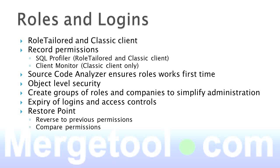When you administer logins with multiple companies and a couple hundred roles, it gets very time consuming because you have so many roles multiplied by the number of companies to assign to each user. Easy Security allows you to create groups of roles and groups of companies, so instead of assigning them individually you may only have one or two permissions per user. It even allows you to set up a user to mirror another one, so you don't need to maintain all five warehouse people individually — just maintain one and the rest are the same. You can also set up expiry of logins and access control, and Easy Security will automatically remove the access when the expiry date arrives.